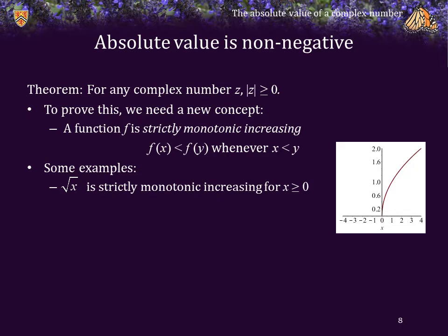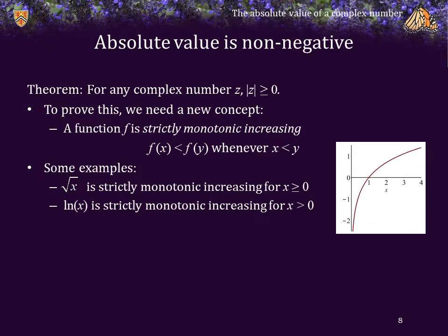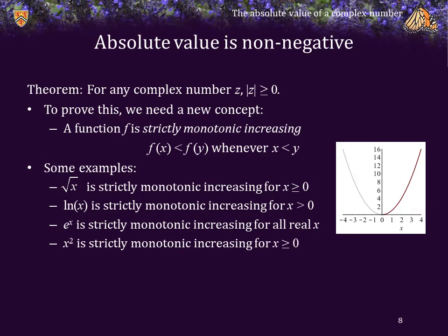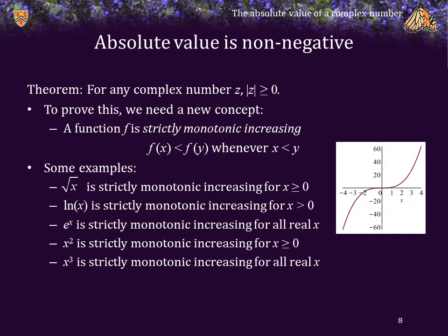1 is less than 3, and the square root of 1 is less than the square root of 3. ln(x) is also strictly increasing for x greater than 0: 1 is less than 4, and ln(1) is less than ln(4). e to the x is also strictly monotonic increasing for all real x: negative 3 is less than 2, and e to the negative 3 is less than e to the 2. x squared is monotonically increasing, but only for x greater than 0: 1 is less than 3, and 1 squared is less than 3 squared, or 9. Finally, x cubed is also monotonically increasing for all real values of x.